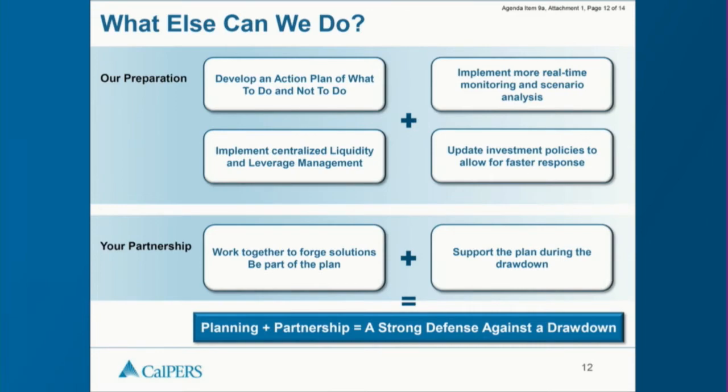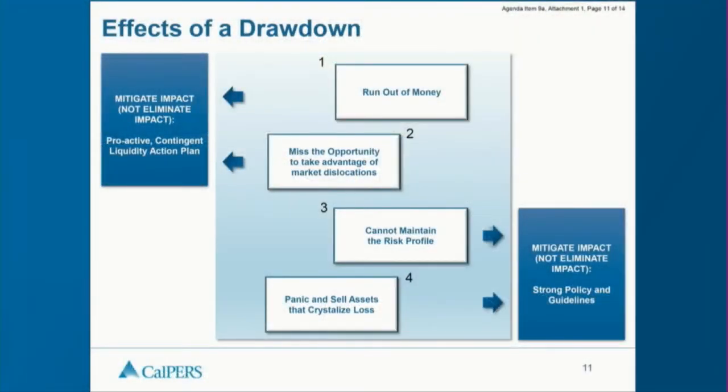A quick summary of the key points: develop a plan to cover the four undesirable outcomes. To mitigate running out of money or missing opportunities, develop the liquidity plan. To prevent panic selling or drifting from our risk profile, stick to the plan. What not to do during a crisis is equally important: do not succumb to common investment behavioral biases, and do not deviate from the predetermined plan without very strong justification.